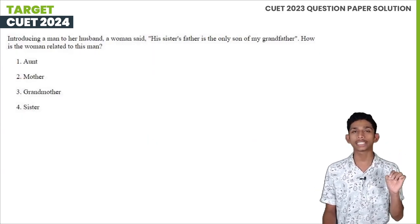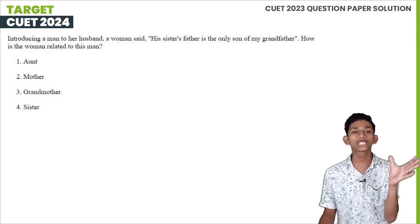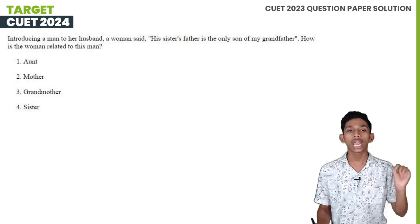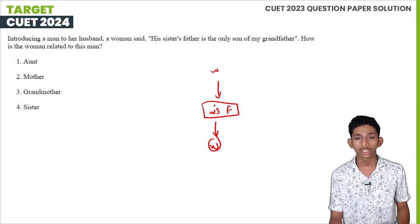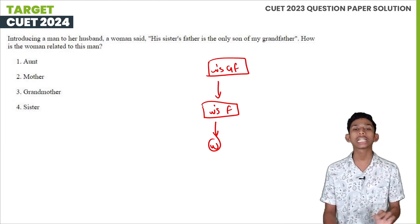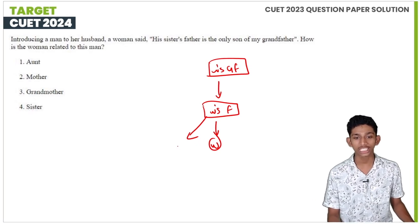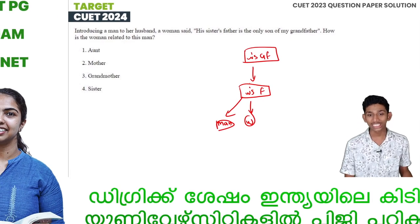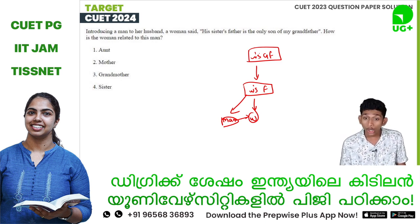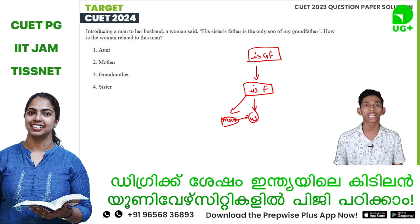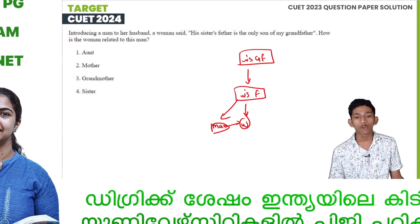Introducing a man to her husband, a woman says: 'His sister's father is the only son of my grandfather.' How is the woman related to the man? The man's sister's father means the man's father. That father is the only son of the woman's grandfather, meaning he is the woman's father too. So the woman is the man's sister.